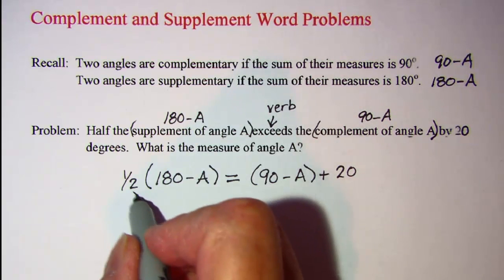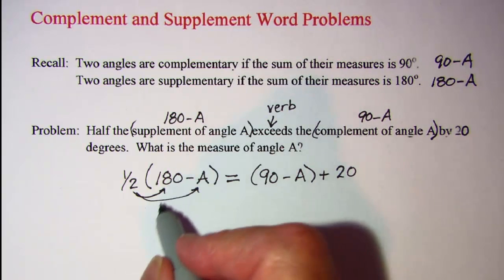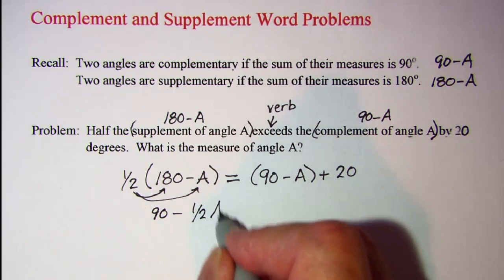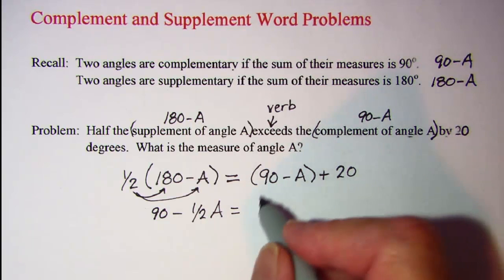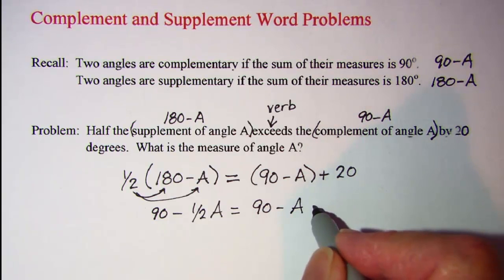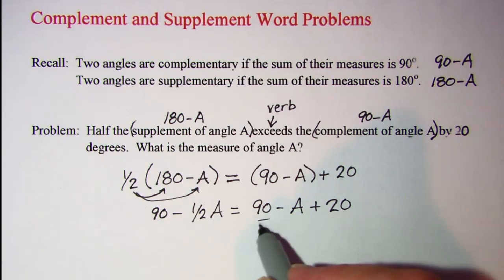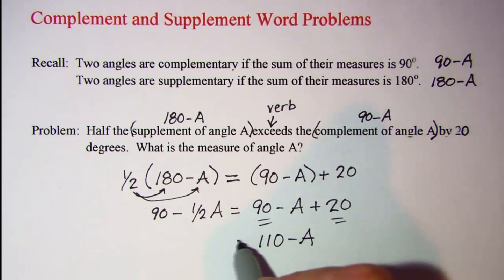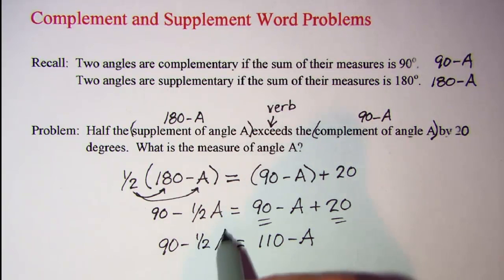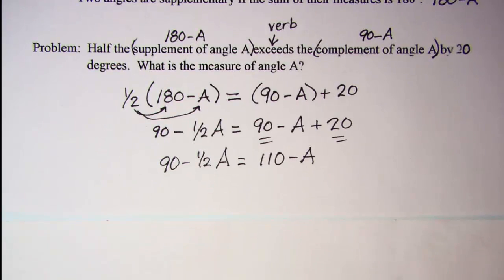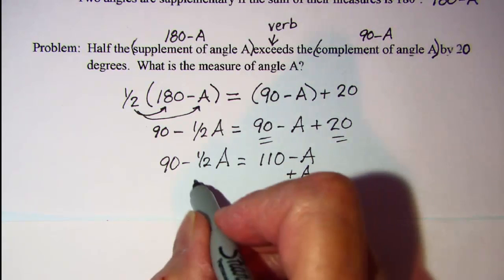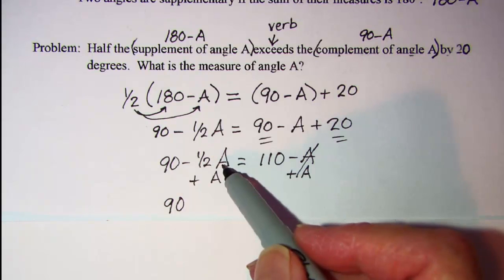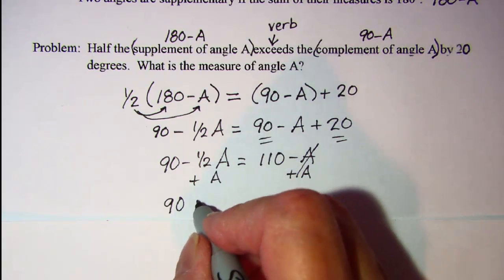Let's distribute this one half through the binomial. One half of 180 is 90, and then one half times A is one half A. I don't need these parentheses, so let's just copy this expression. When I have a negative one half A and a positive A, that leaves me with a positive one half A.